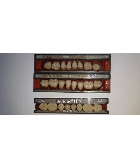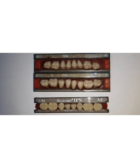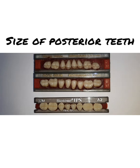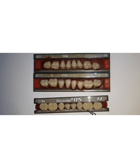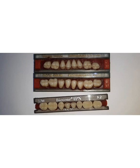The factors which can influence the selection of posterior teeth are the size of the teeth, the form of the teeth, the color of the teeth, and the material with which the teeth are made. When we talk about the size of posterior teeth, we have to take three things into consideration: one is the buccolingual width, the second is the mesiodistal length, and the third is the occlusal gingival height.